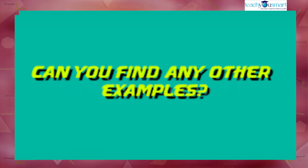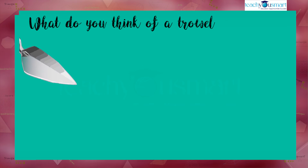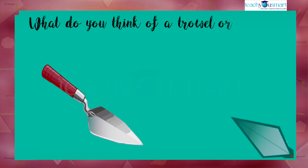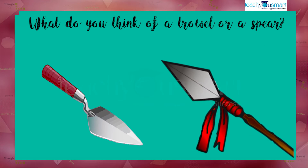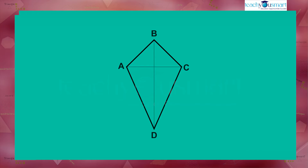Can you find any other examples? What do you think of a trowel? Don't they look similar to a kite? Now let's see some peculiarities of a kite. In kite ABCD, AC and BD are the diagonals and they meet at M. Let's check how they cut each other.